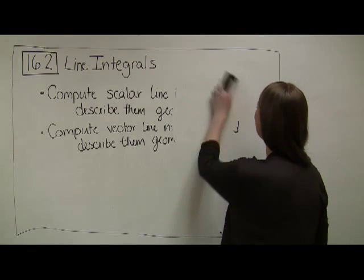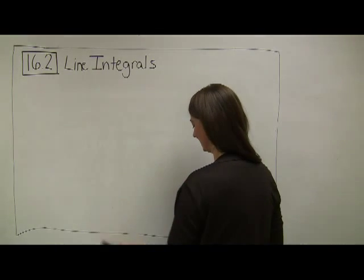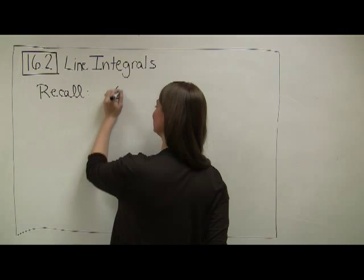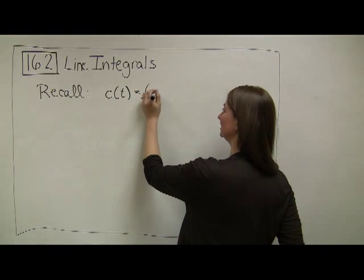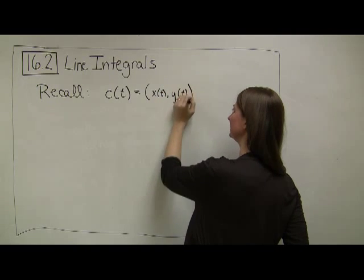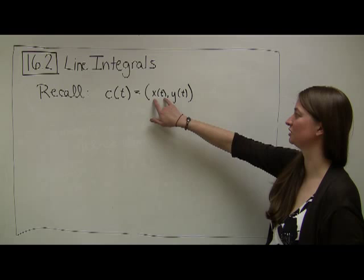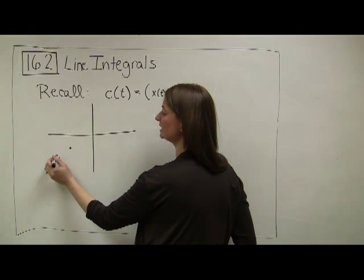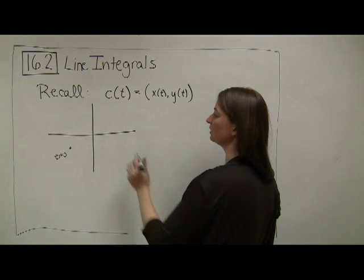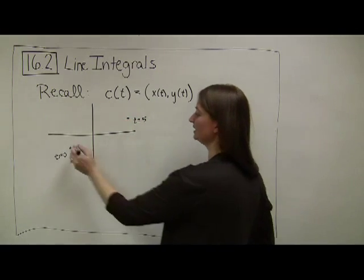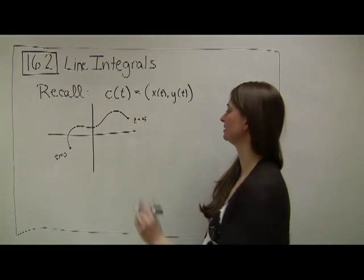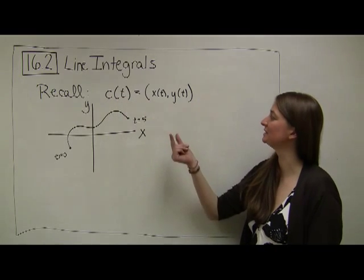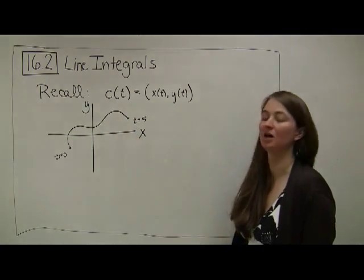Before we get started, let's do a brief recall of paths. A path c(t) is going to be some function (x(t), y(t)). For this discussion, we're going to talk about paths that have outputs in R². For some given time t — say t equals zero — I get an output that's a point here, and at t equals five I get an output there. As t changes, it traces out some path in the xy-plane. I put in t and my output is a point along this curve.